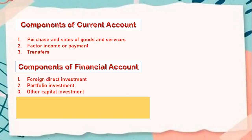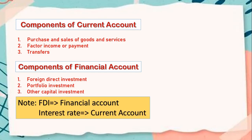An interesting distinction: FDI is recorded in the financial account, but interest earned is recorded in the current account. This means if you do foreign direct investment it will be in the financial account, but if you invest in a foreign country and receive interest from that investment, that interest income would be recorded in your current account as factor income.